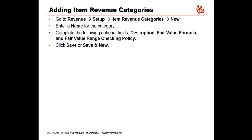Complete the following optional fields. All fields are displayed in the item revenue categories list. Description: use this field to provide a longer description than is practical for the name. Fair value formula: the option you select here becomes the default for fair value price records created for this item revenue category and for items included in this category. To add options to the list, see adding fair value formulas.